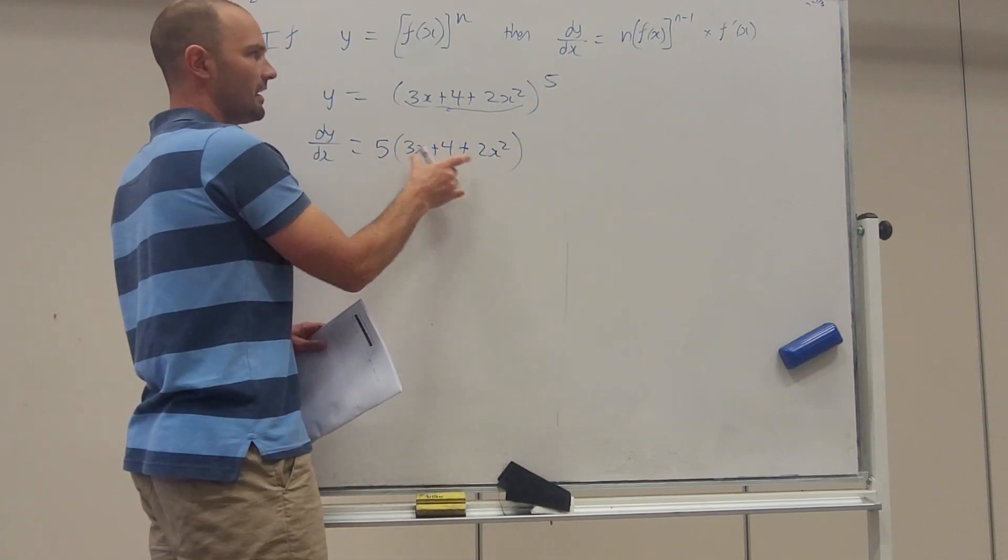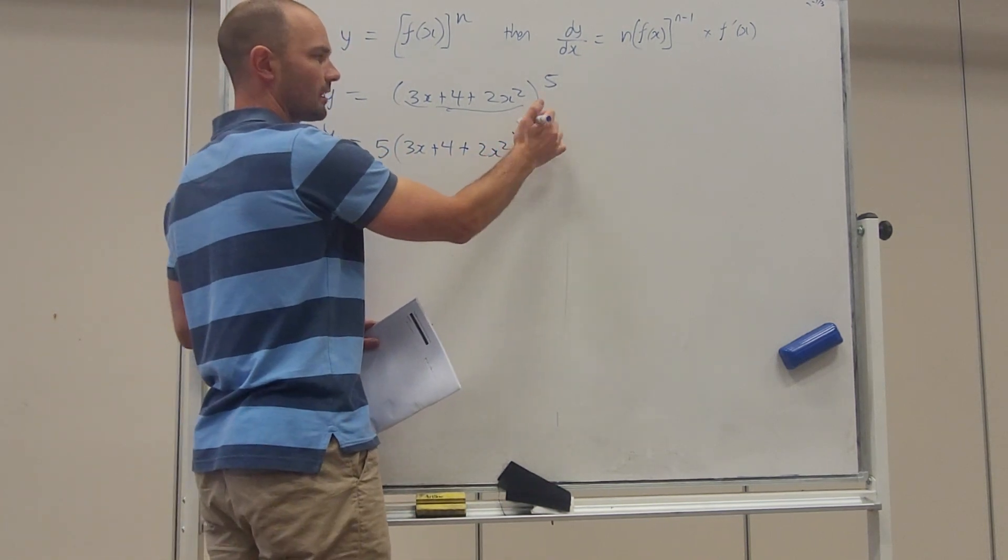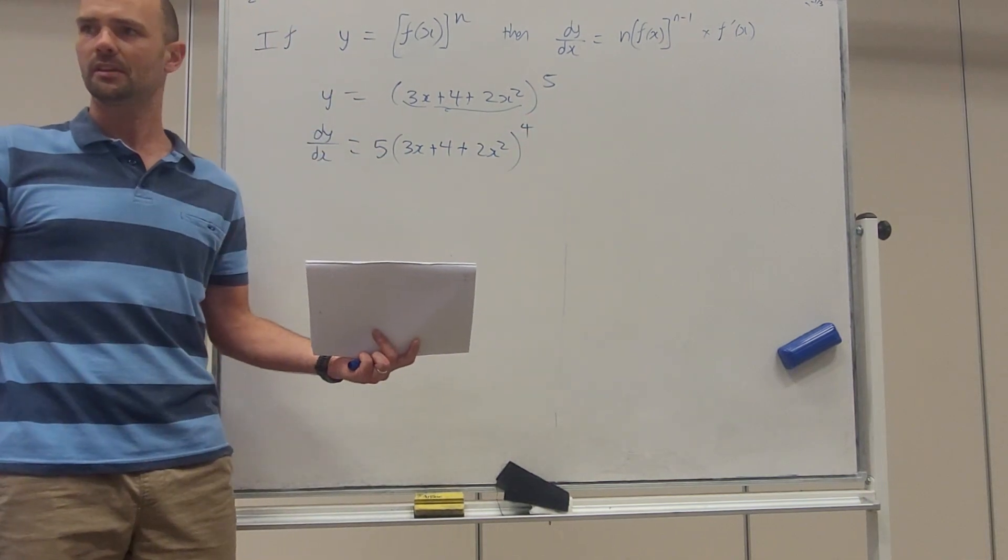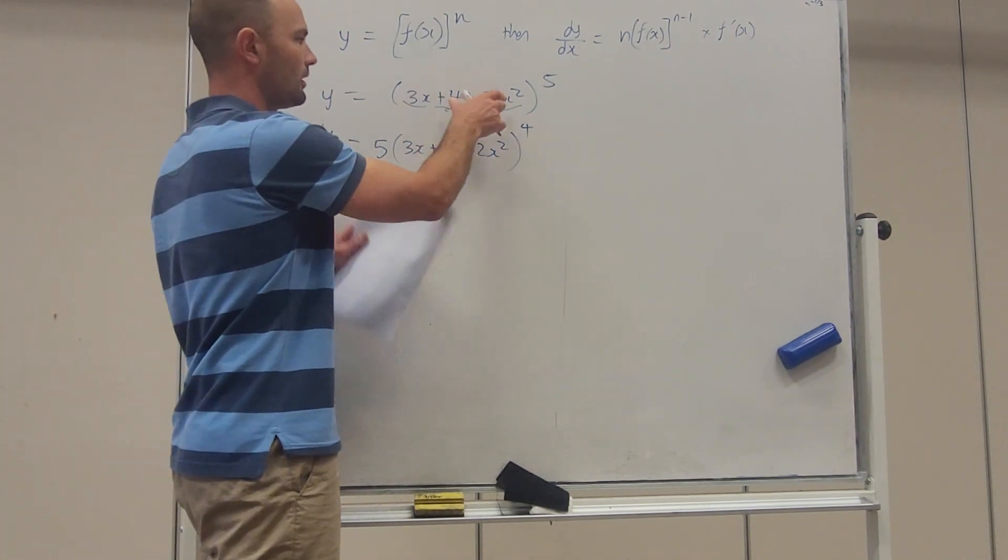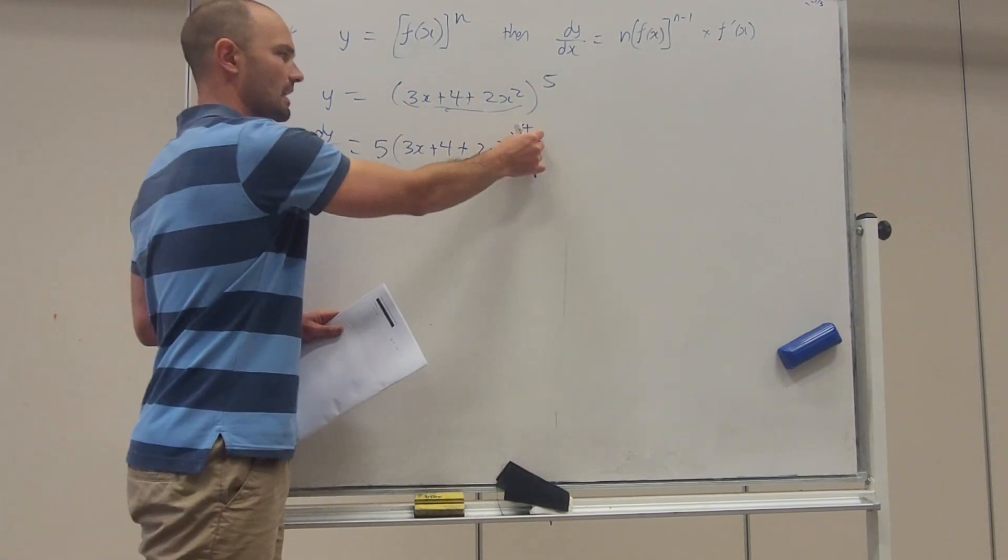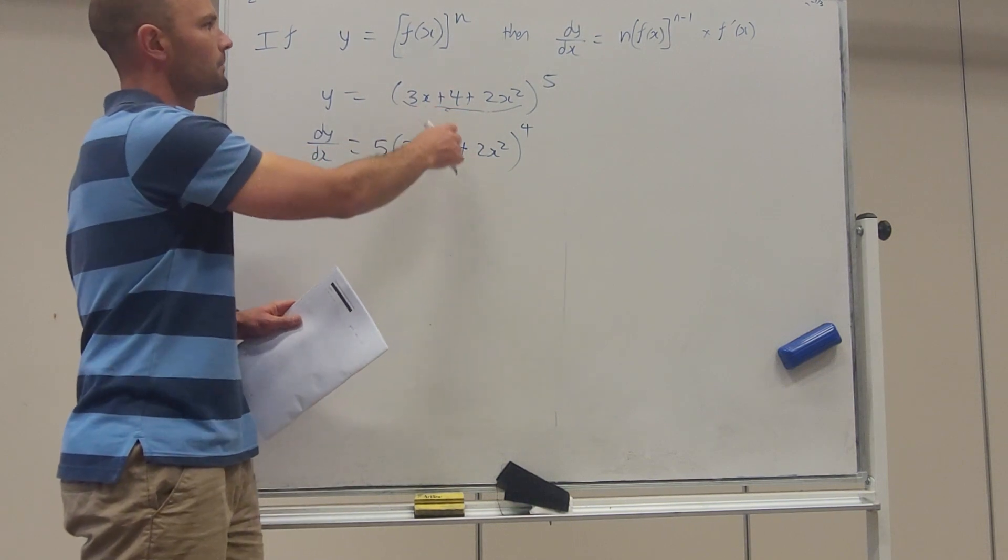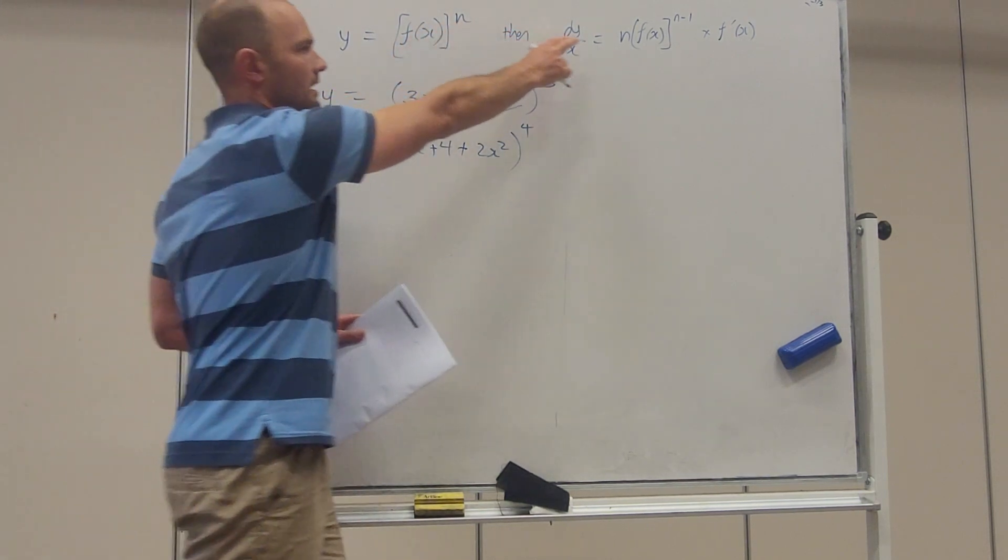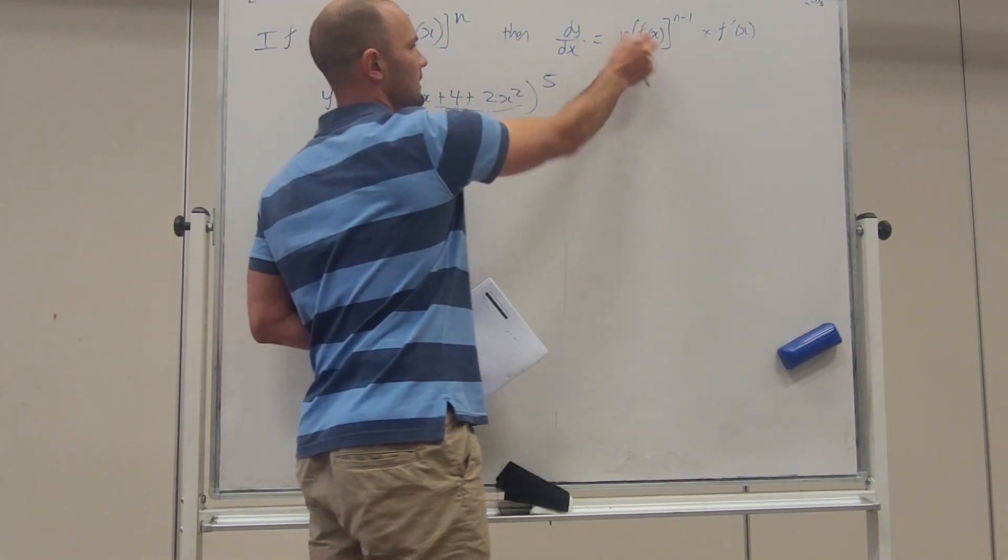So, n, f(x), and then n minus 1. Well, that's just simple differentiation, isn't it? It's like, you know, that's x to the power of 5: n, x, n minus 1. Okay, except we're doing it with f(x). Alright, so that's n, f(x), n minus 1.